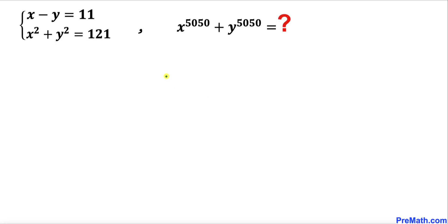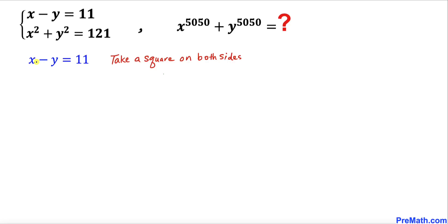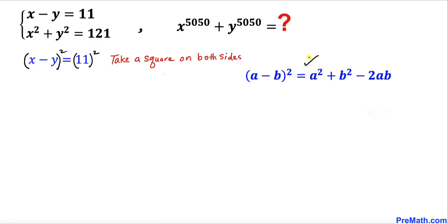Let's go ahead and get started with the solution. Here's our very first step: let's focus on our first equation x minus y equals 11. Now let's take a square on both sides and recall the famous identity a minus b whole squared. Applying it on the left hand side gives us x squared plus y squared minus 2xy equals 121 on the right hand side.